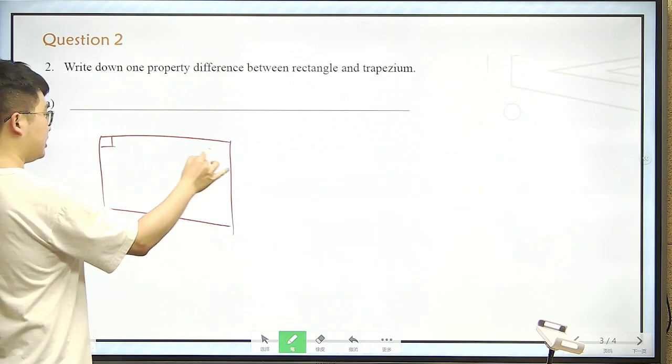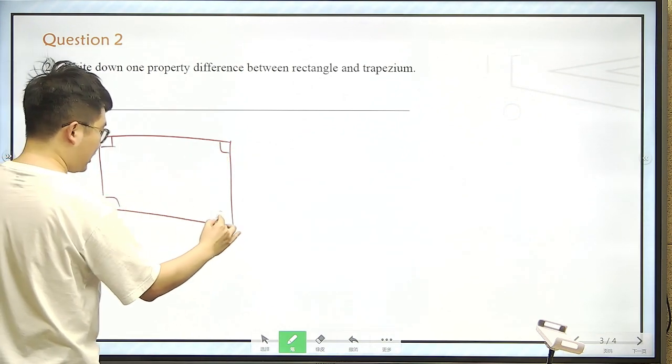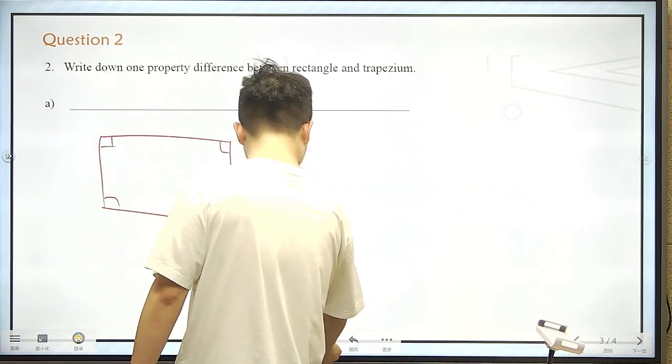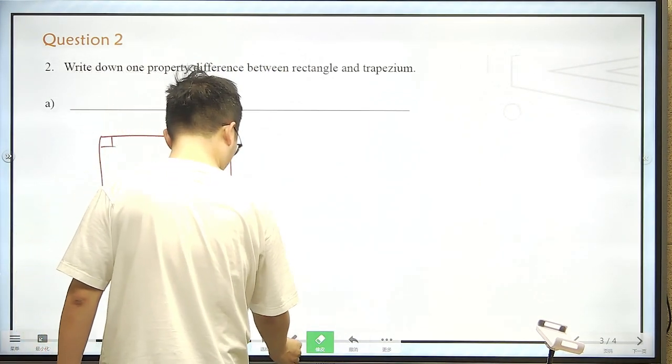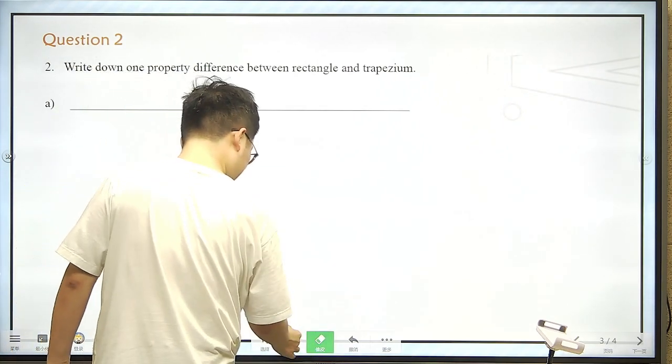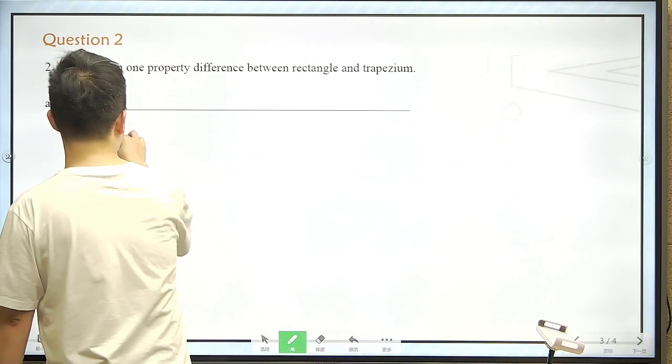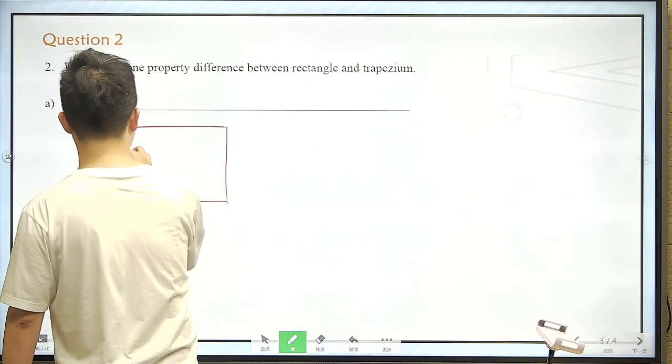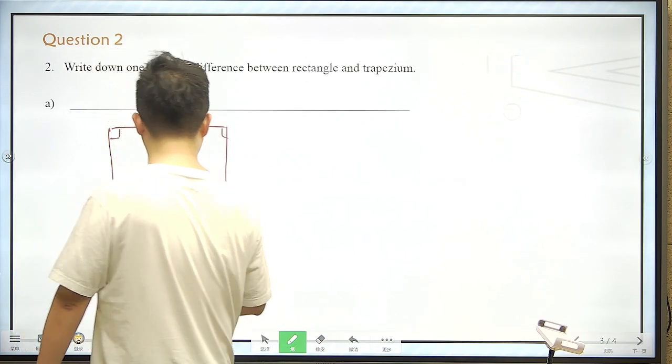Four sides with four right angles. I suppose that's why this is called rectangle. But my drawing is poor. Let me do this again. Let me do this again, and this time maybe a little better.